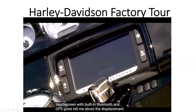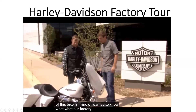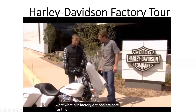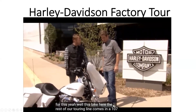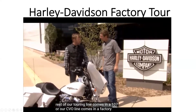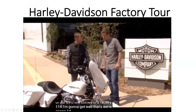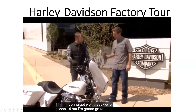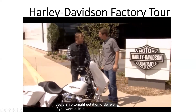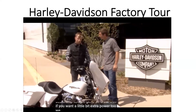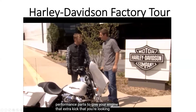Tell me about the displacement of this bike and the factory options. The rest of our touring line comes in a 107, or our CVO line comes in a factory 114. If you want a little bit of extra power, we offer a ton of screamin' eagle performance parts to give your engine that extra kick you're looking for.